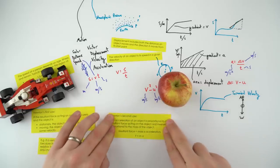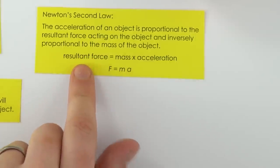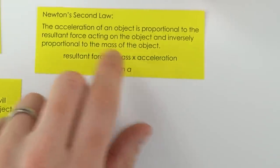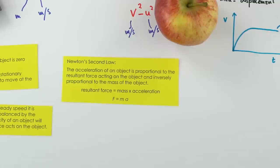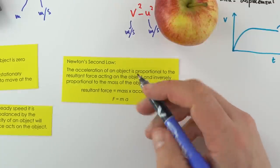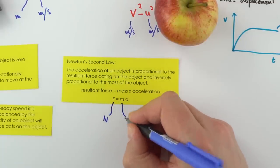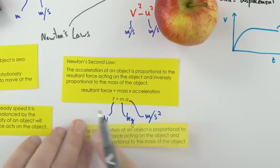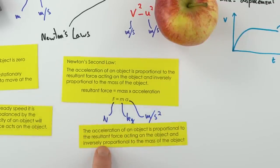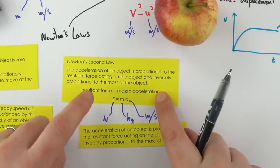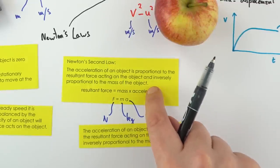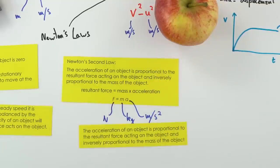Newton's second law states that if there is a resultant force on an object, the object will accelerate. The size of that acceleration depends on the mass of the object and the force applied: F = ma, with force in Newtons, mass in kilograms, and acceleration in m/s². Acceleration is proportional to the resultant force and inversely proportional to mass — bigger mass means smaller acceleration for the same force.